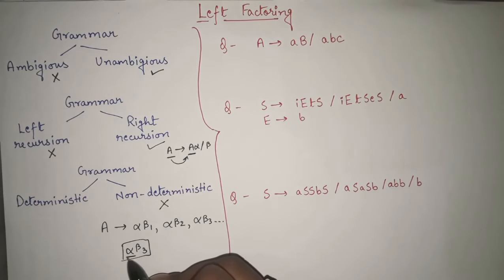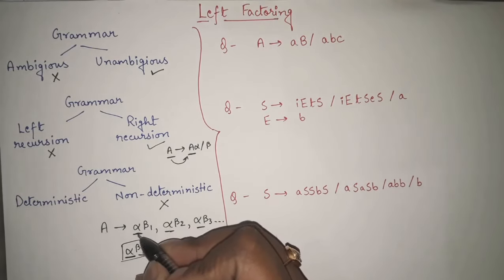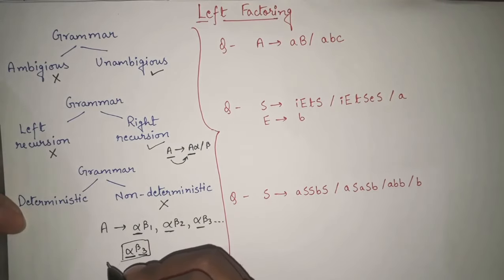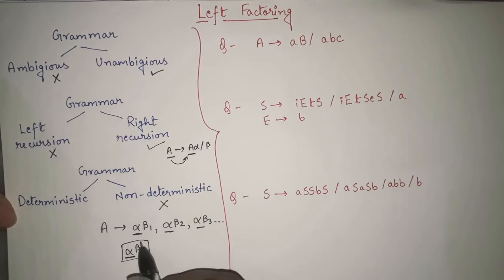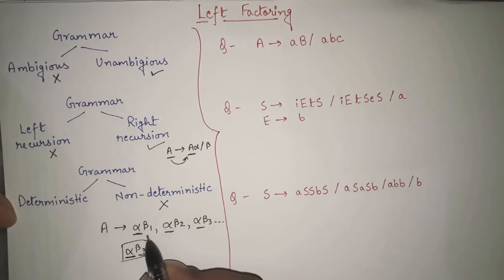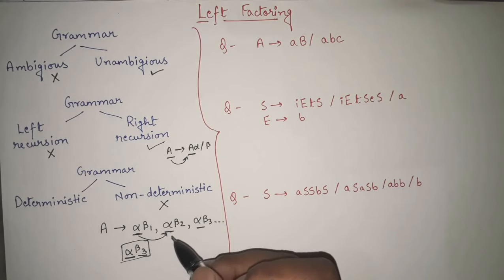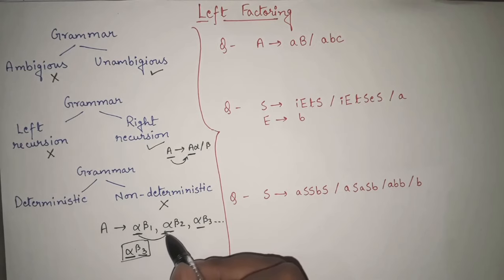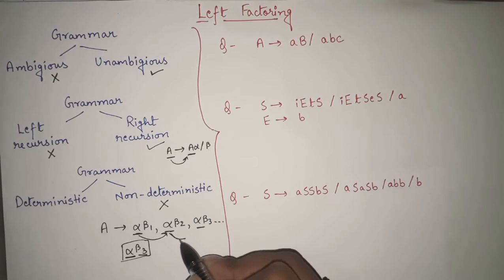So you will backtrack and go to check the second production. Again, alpha is matched, but then you find β2, not β3 — so again you backtrack and go to the next. You have to backtrack again and again. This backtracking is not something the parsers want because backtracking wastes a lot of extra time and effort of the parser. The main cause of this non-determinism is the repetition of the same prefix across productions — and due to this, the parser cannot determine exactly which production to go into.